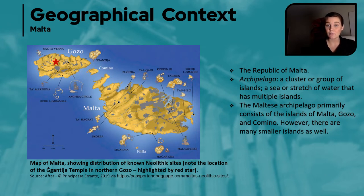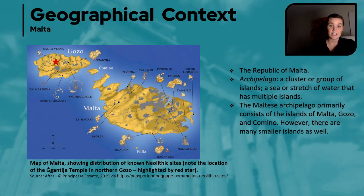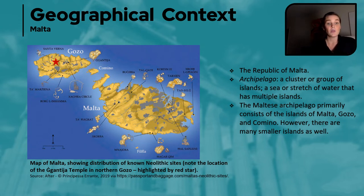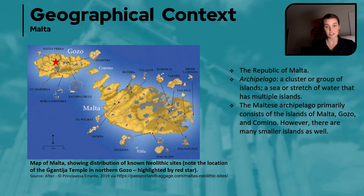Ġgantija, the site we're going to be looking at — marked with the red star on my map — is located on the northern part of Gozo in an area called the Xagħra Plateau. As you can see on this map, Ġgantija is not the only megalithic temple in Malta; there are plenty on the main island as well. These people were clearly some kind of seafarers; most people speculate they came from Sicily as that is the closest land-wise, since Ġgantija is one of the oldest sites on the archipelago and is in the northernmost part. The construction techniques are fairly consistent across sites, which makes this theory fairly sound.